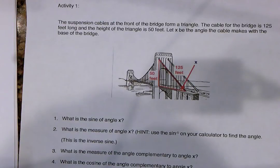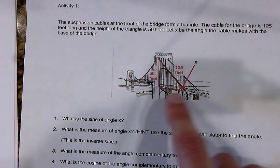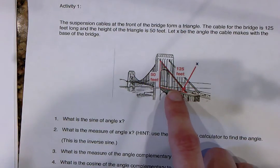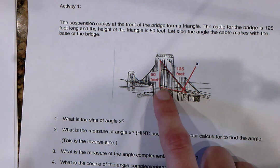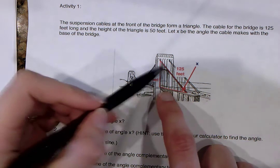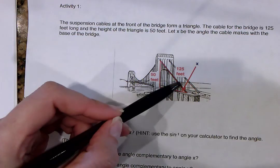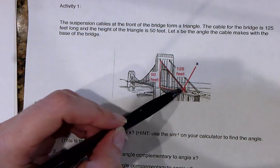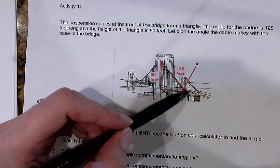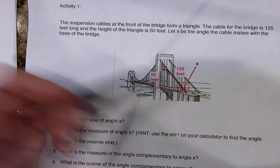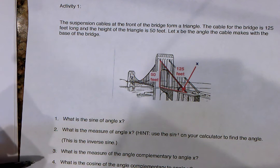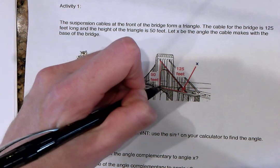This is about complementary angles and how they deal with trigonometry. The suspension cables at the front of the bridge form a right triangle. The cable, which is the hypotenuse, is 125 feet long, and the height of the triangle is 50 feet. Let x be the angle that the cable makes with the base of the bridge. That's the angle we're looking for, and this is a right triangle here.